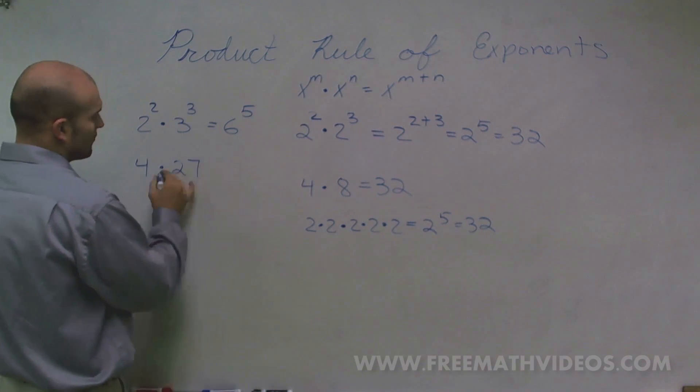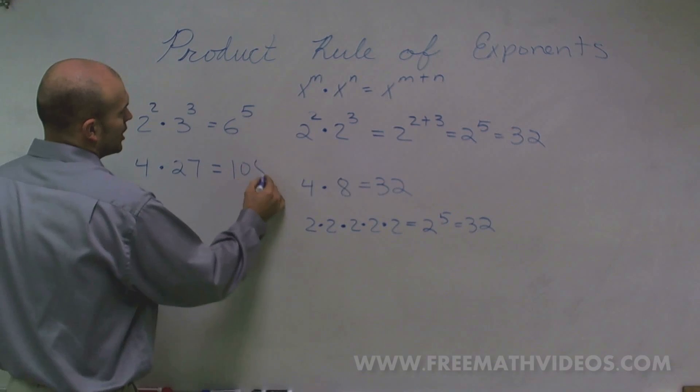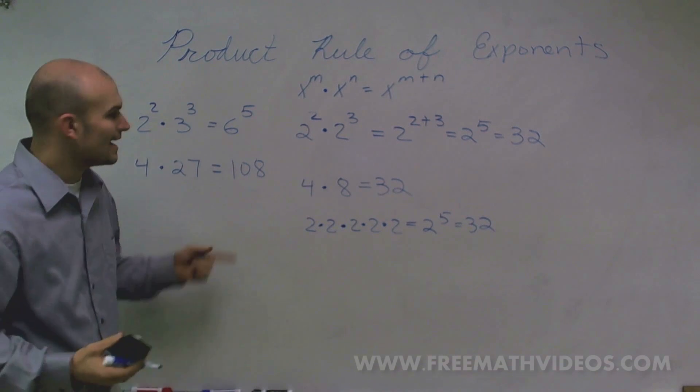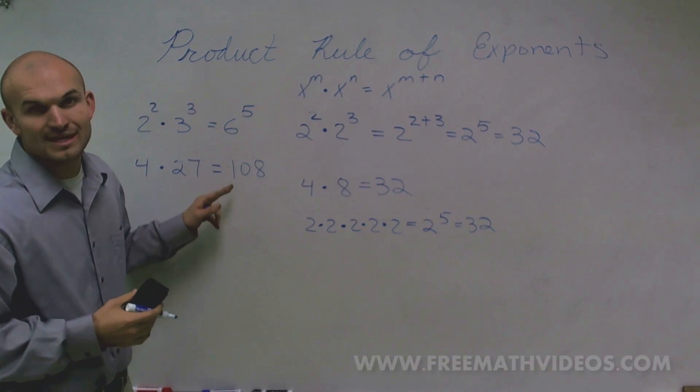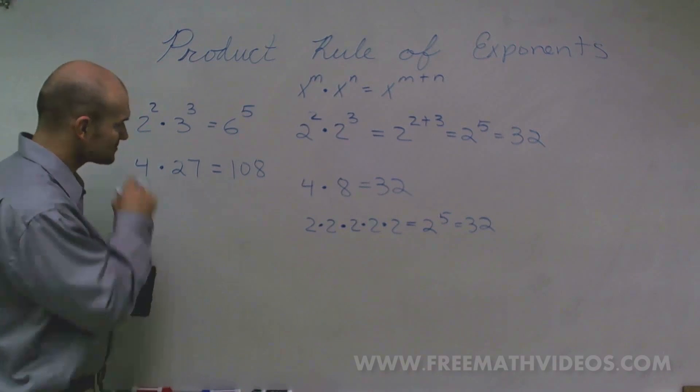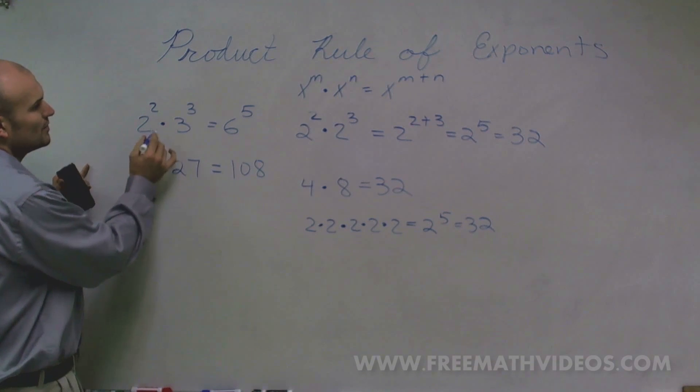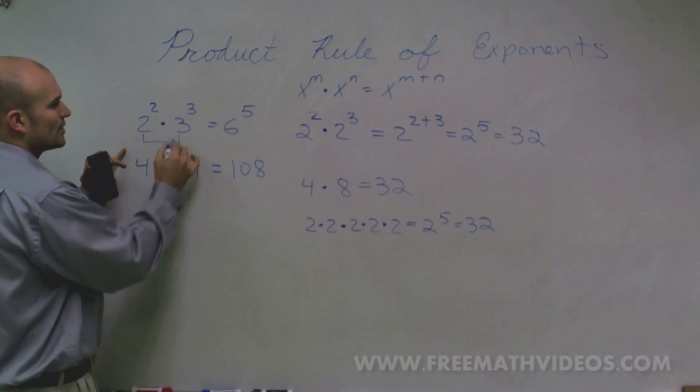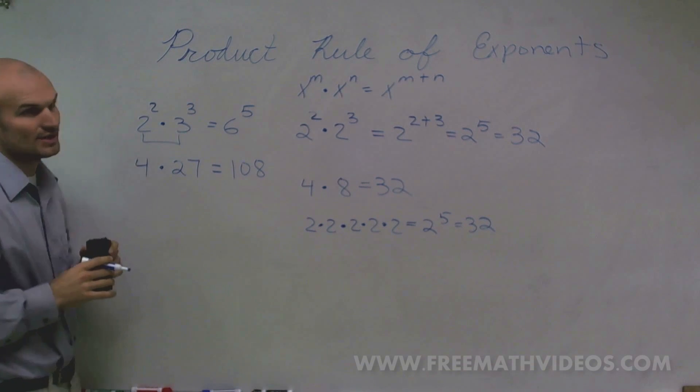2 squared is going to be 4 times 3 cubed is 27. Now, 4 times 27 is going to be 108. And I don't know what 6 to the 5th power is, but it's definitely not 108. So make sure that the rules of our exponents do not work if your two bases are not the same.